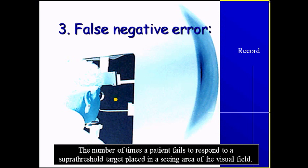False negative means: after repeating the examination, the sensitivity of one point has been determined. After some time in the test, the program will come back to the same location and put a quite strong stimulus — the patient should see it because the sensitivity of this location was already determined. If the patient responds that he doesn't see it, this is a false negative. The patient is expected to see that stimulus, but says he doesn't — meaning he may have lost attention. Again, this number should be less than one-third of the number of times tested.